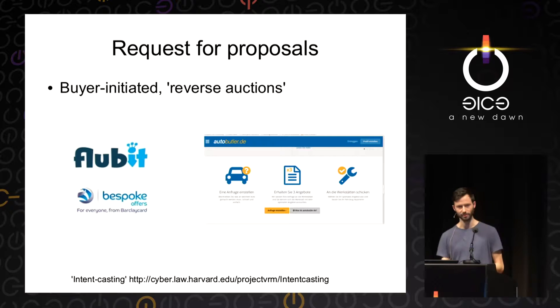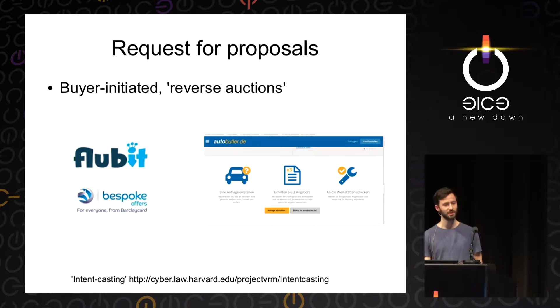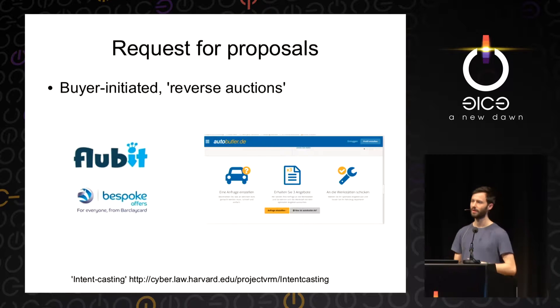There's a service called Flubit — you find something online you want to buy but don't like the price. You copy the URL, paste it into the service, and within a few hours you get back offers from companies competing to provide that same product at a cheaper price. Doc Searles from Harvard University's Project VRM — Vendor Relationship Management — calls this intent casting: rather than consumers responding to messages from marketers, it's actually suppliers responding to the intentions broadcast by individuals.